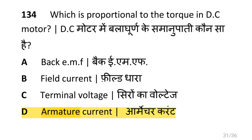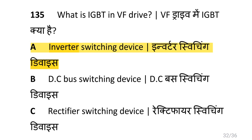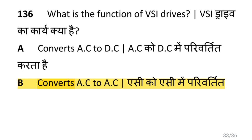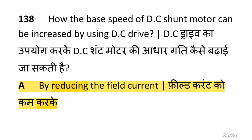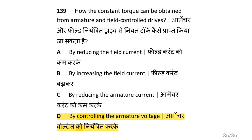Which is proportional to the torque in DC motor? That is armature current. What is the IGBT in VF drive? That is inverter switching device. Why are AC drives mostly used in process plants? That is maintenance free long life. How can the base speed of DC shunt motor be increased by using DC drives? That is by reducing the field current. How can constant torque be obtained from armature and field control drives? That is by controlling the armature voltage.